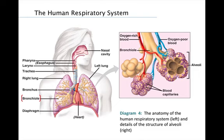The bronchioles dead-end in grape-like clusters of air sacs called alveoli. Each of our lungs contains millions of these tiny sacs. The inner surface of each alveolus is lined with a thin layer of epithelial cells. Oxygen and carbon dioxide then diffuse across the epithelial cells — oxygen enters the circulatory system while carbon dioxide exits the circulatory system.